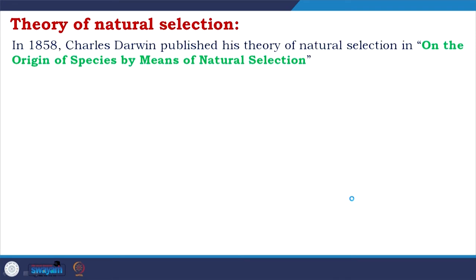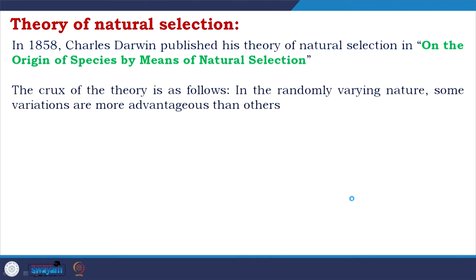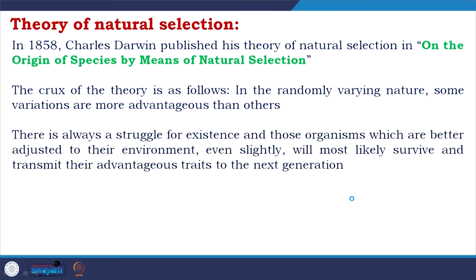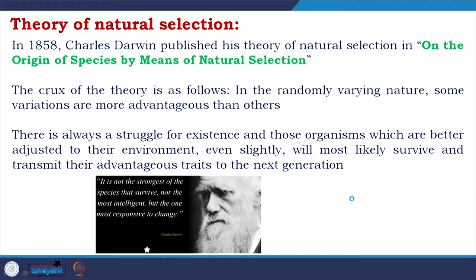Regarding the theory of natural selection by Charles Darwin: in 1858, Charles Darwin published his theory of natural selection — 'On the Origin of Species by Means of Natural Selection.' The crux of the theory was that in randomly varying nature, some variations are more advantageous than others. There is always a struggle for existence, and those organisms better adjusted to their environment will most likely survive and transmit their advantageous traits to the next generation. In his own words: it is not the strongest of the species that survives, not the most intelligent, but the one most responsive to change.